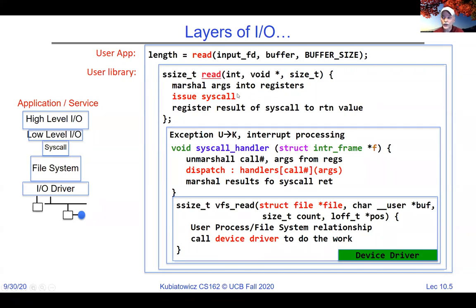You're getting familiar with this in project one. Inside the kernel, the system call is a type of exception. It goes into the system call handler, where you unmarshall the arguments and dispatch a handler based on what you're trying to do — for instance, dispatching to a read handler. Then you marshal results back and return. One layer deeper, dispatching on read might call VFS read inside the kernel, which takes the file description structure, a buffer, and does the file access, potentially calling a device driver.